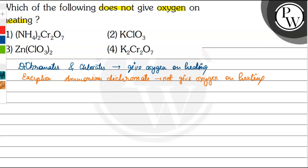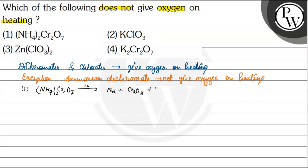The first option is ammonium dichromate, NH4₂Cr₂O₇. When heated, it gives nitrogen gas, chromium oxide (Cr₂O₃), and four molecules of water. It does not give oxygen at all on heating. So option number one is correct.